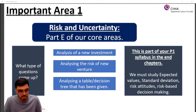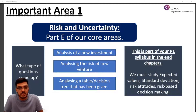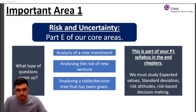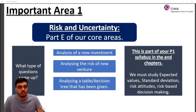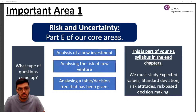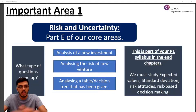A very common question type is analyzing a table or decision tree. They'll give you a table on different risk attitudes or risk-based decision-making techniques like minimax and maximax, then ask you to make a decision. For example: you are a risk seeker — which outcome will you go with? They can also give you a decision tree and ask you to explain specific points on it. This is part of your P1 syllabus end chapters.